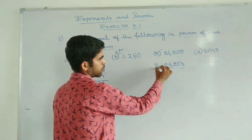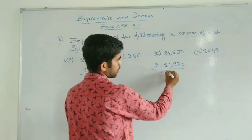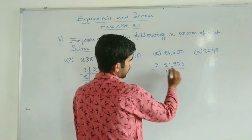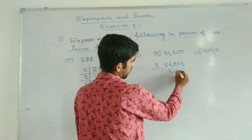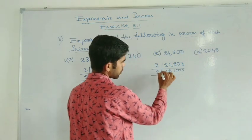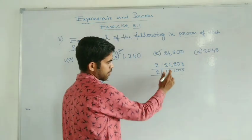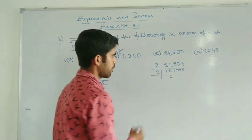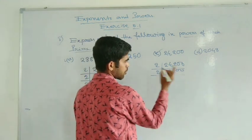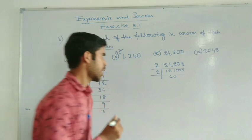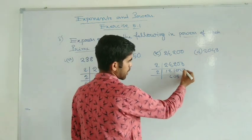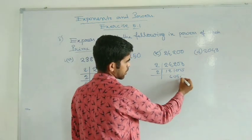So first you divide by 2. Then there will be 2. So 2 goes into 2 one time. Now again divide this by 2. 2 goes into 10 five times and there is 0 remainder. Now this 10: 2 goes into 10 five times and there is 0 remainder.